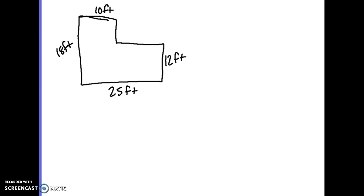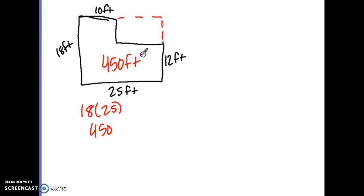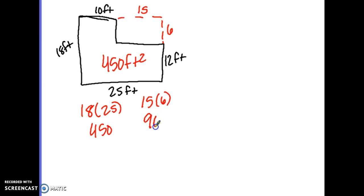For the next one, I find the area of the whole 18 by 25 rectangle, which is 450. Then I take out the cut-out piece: the bottom is 25, taking out 10 leaves 15; the height is 18, taking out 12 leaves 6. The small rectangle cut out is 10 by 12... wait, that's 6. Its area is 90. So 450 minus 90 is 360 square feet.